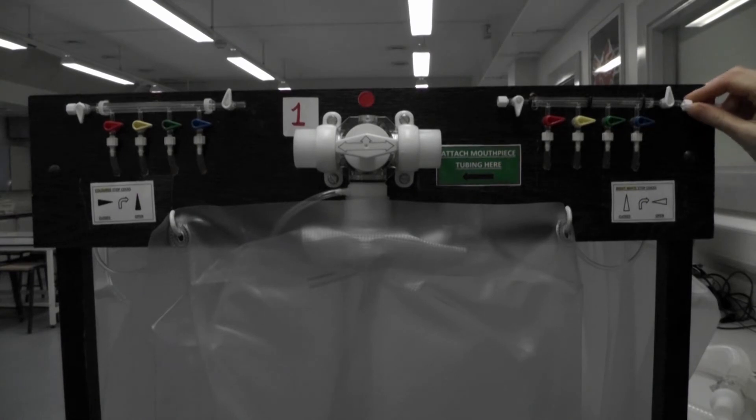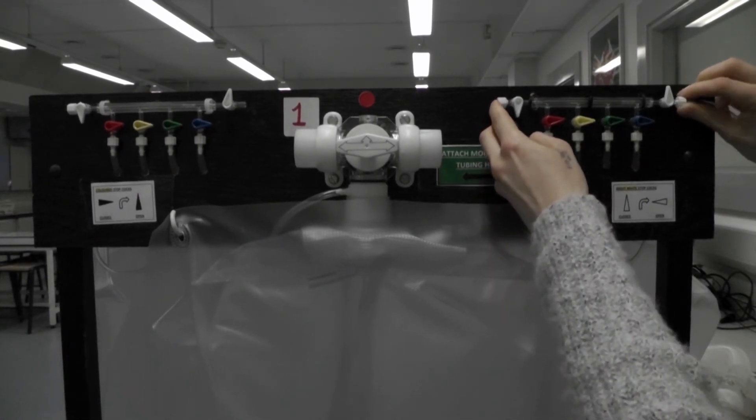To analyze the composition of the air in the sample, first connect the two tubes from the Servomex machine to a Douglas bag to create a closed loop system.